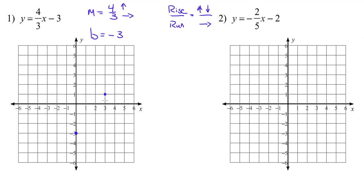I have room to do it again, so I'm going to move up 4 and right 3 once more to place another point. Now all we've got to do is take our straight edge, line up the points, and draw our line — extending it all the way through. This line is the graph of the linear equation y equals 4/3 x minus 3.